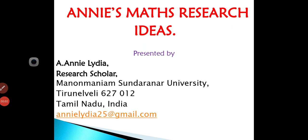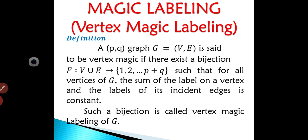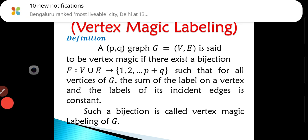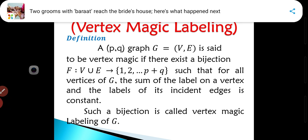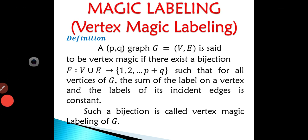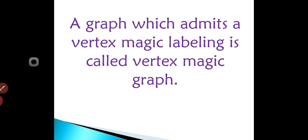Welcome to Annie's Max Research Ideas. Today we are going to see about magic labeling, that is vertex magic labeling. In our previous video, we saw about H magic labeling. Here we take a graph G equal to V comma E, that is a P comma Q graph, where P is the order of the graph and Q is the size of the graph. The mapping is F: V union E to {1, 2, ..., P+Q}. The condition is: the sum of the label on a vertex and the labels of its incident edges is constant. If this labeling exists, then the graph is called a vertex magic graph.